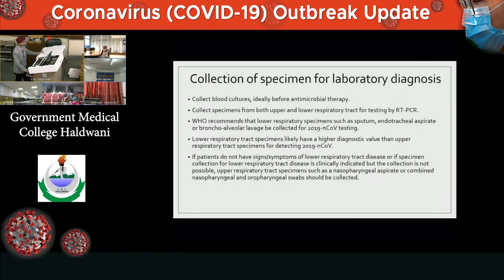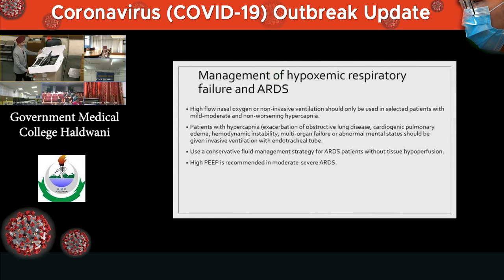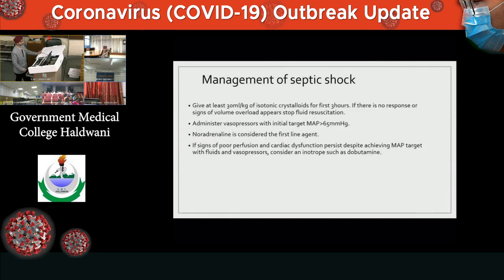Sample collection demonstration will be done after this session. Patients may require non-invasive or invasive ventilatory support depending on their condition. In septic shock, the patient should be given adequate fluid — 30 ml per kg body weight of isotonic crystalloids in the first three hours. If there is no response or signs of volume overload, fluid resuscitation should be stopped. Vasopressors can be administered if blood pressure is not maintained; noradrenaline is considered the first-line vasopressor agent.